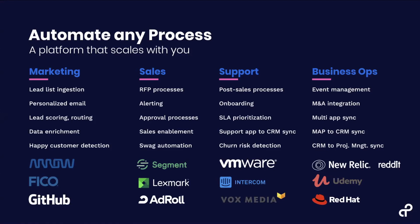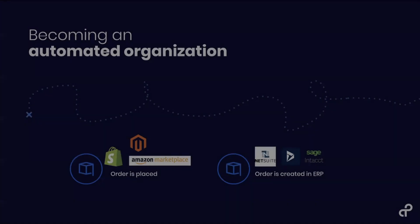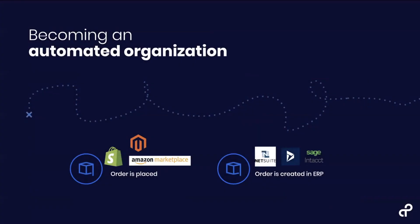As a company, Tray is attracting customers from all over the board — Fortune 500 companies like Arrow Electronics, IBM, and SAP; fast-growing companies like Intercom and Segment; and companies that have recently gone public like Lyft — all across multiple different departments.